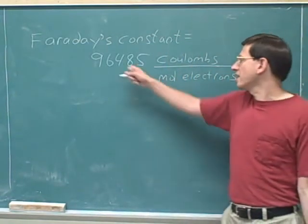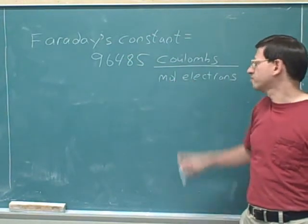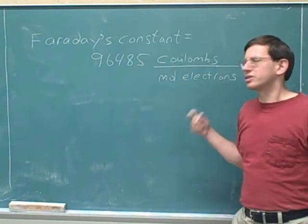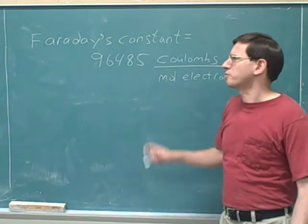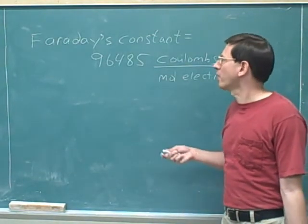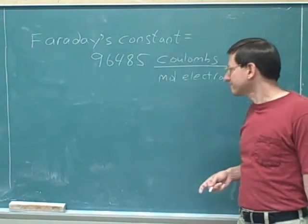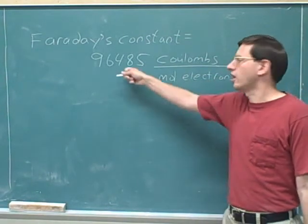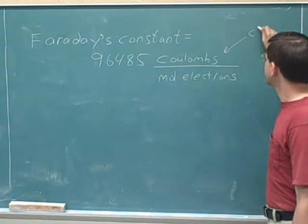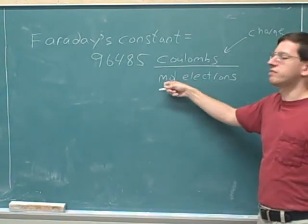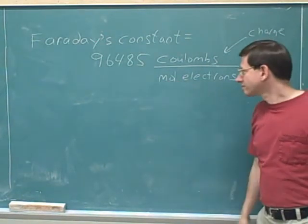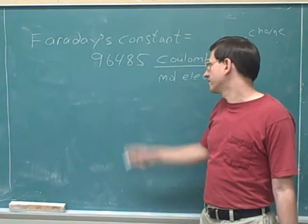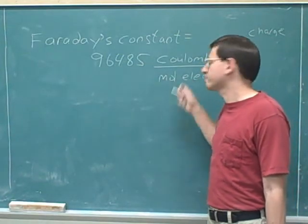Faraday's constant is 96,485 Coulombs per mole of electrons. This is a universal constant — anytime someone talks about Faraday's constant, it's always this number. Remember that Coulombs is a measure of charge, and moles is a measure of amount. So what does it tell us about the universe if Faraday's constant is 96,485 Coulombs per mole of electrons?